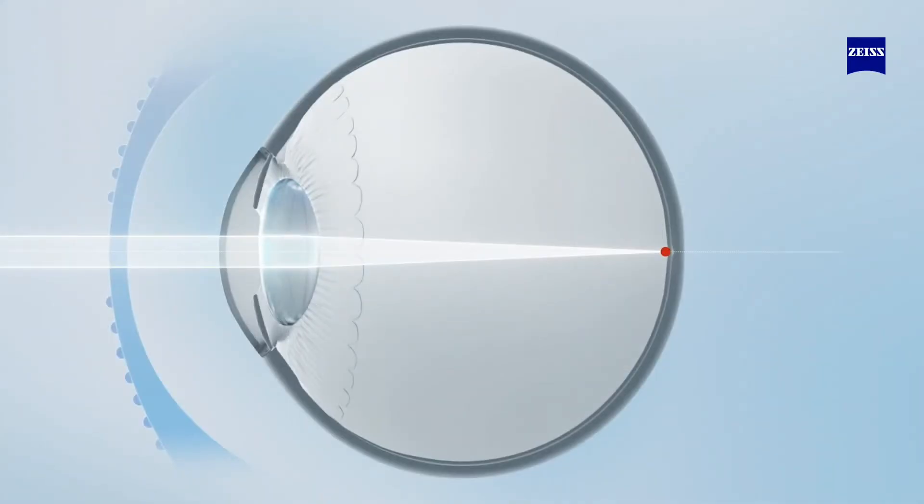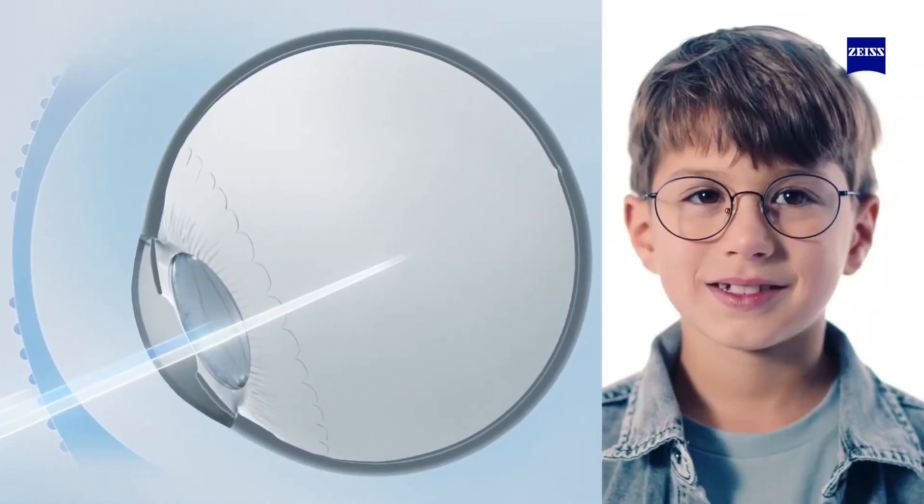The functional zone induces alternating simultaneous blur and myopic correction zones on the peripheral retina, with the aim to slow down the progression of myopia. Because eyes are constantly moving,